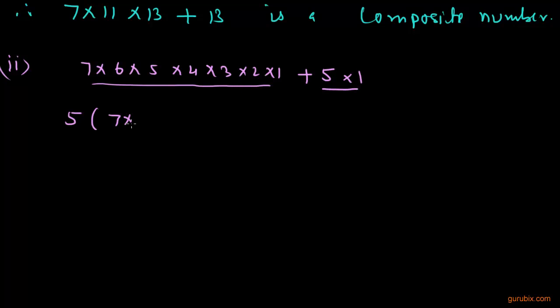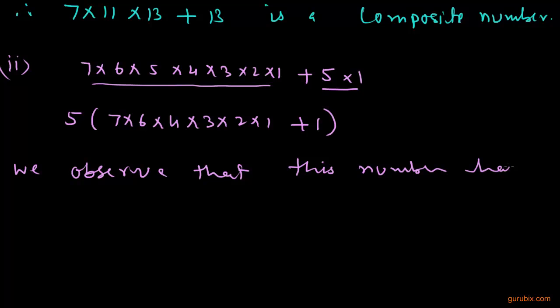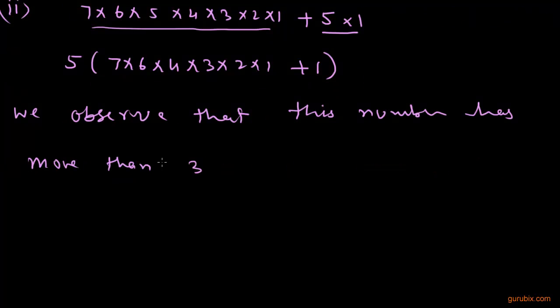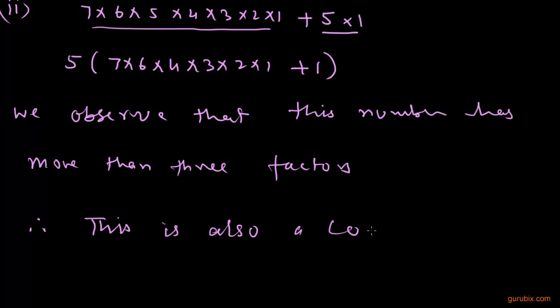Here we remain 7 multiplied by 6 multiplied by 4, 3, 2 and 1 and here we remain just 1 and we observe that this number has more than 3 factors. Therefore, this is also a composite number.